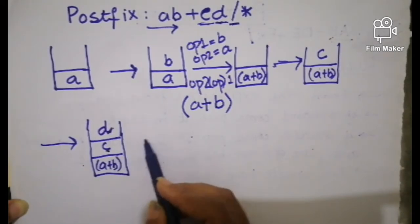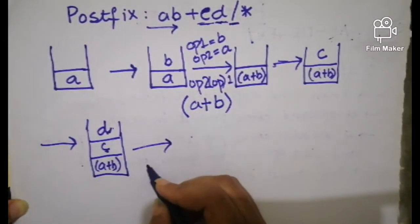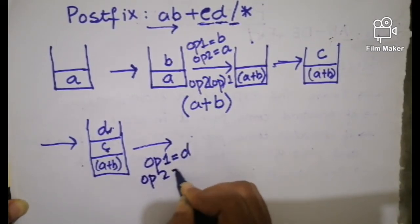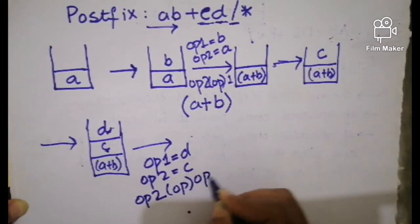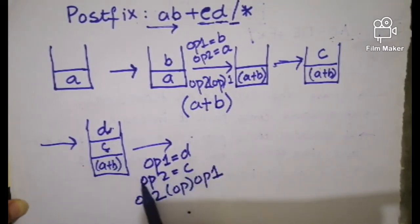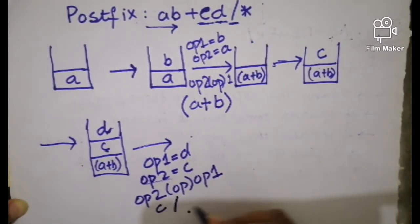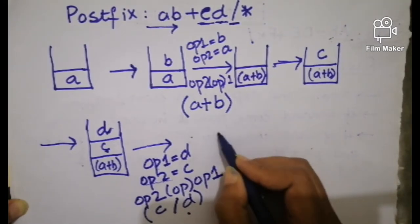The next one is an operator, so when an operator comes we pop the first two operands from the stack and place the operator between them. Operand one is d and operand two is c. The rule is: operand two, operator, operand one. The operator is division, so we write c division d, place the brackets, and push the result into the stack.